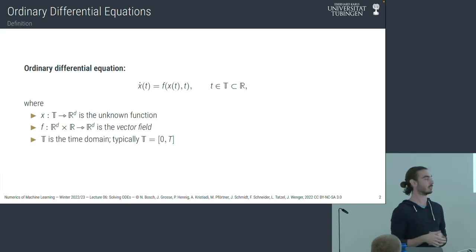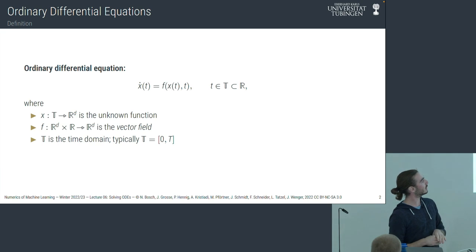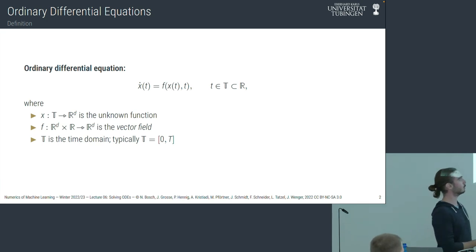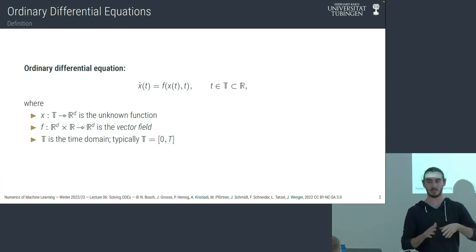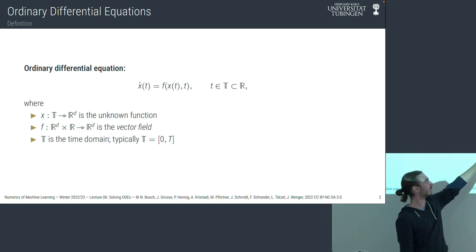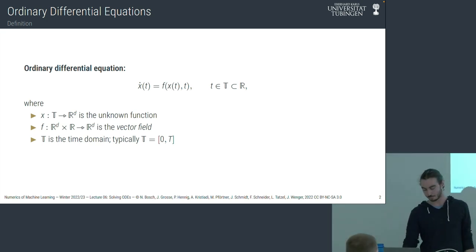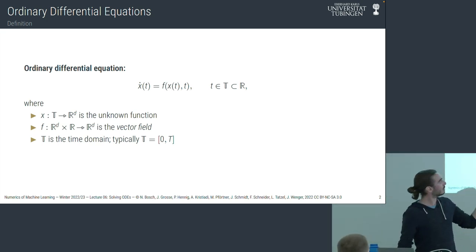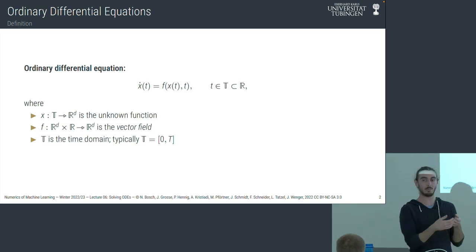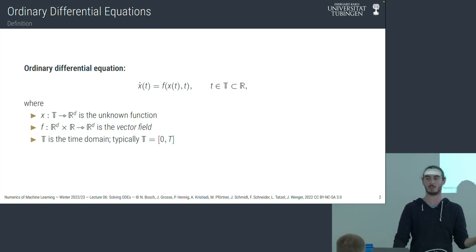That's also why it's called an ordinary differential equation. f on the right-hand side is called the vector field, and it describes the derivative of x given x. Typically we want to solve the ODE for some time domain, not the whole real line, but starting from zero up to some time capital T. In general, it is a way to describe the derivative of a function, but not the function itself. The question is: what is x? Because this thing implicitly describes x, and so we have to do some work to find x.